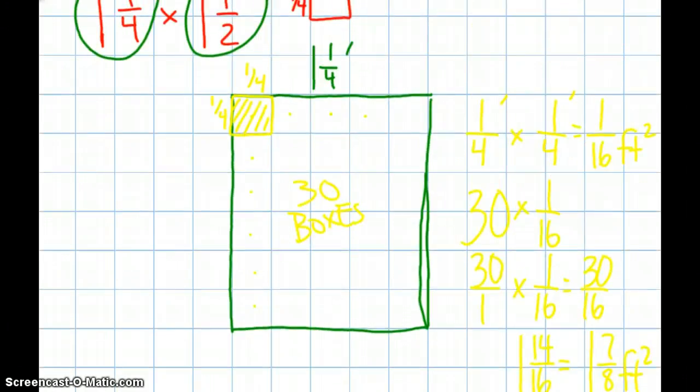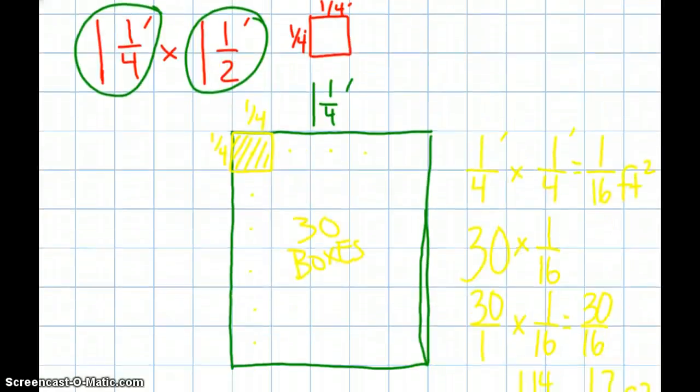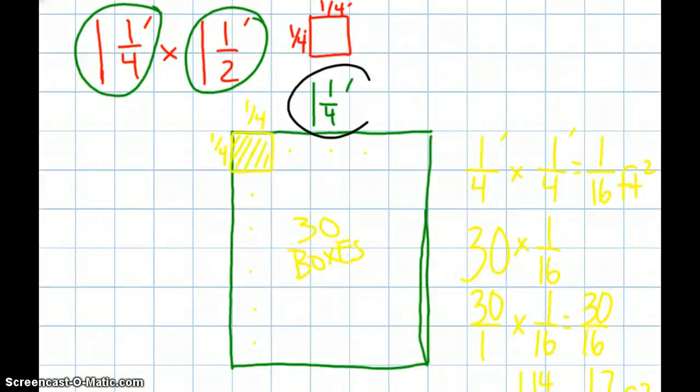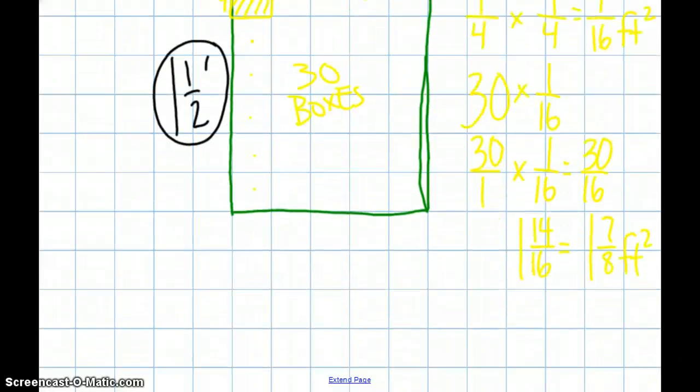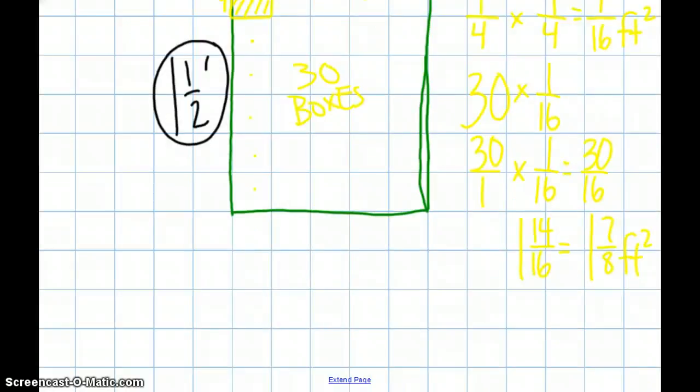The other way to do it is to just take my original dimensions. I have 1 and 1/4 feet long times 1 and 1/2 feet wide. So, I can now just take those two measurements and multiply them. 1 and 1/4 times 1 and 1/2.